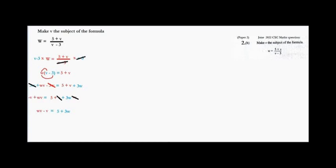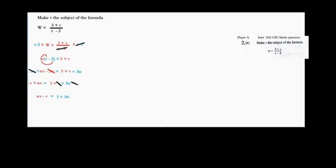What we can do here now is to factor out the common factor. We factor out V, because it is common: V into WV gives us W, and V into V gives us 1. So we have V times (W minus 1) equal 5 plus 3W. Now I divide both sides by (W minus 1). This W minus 1 cancels that W minus 1, and we have V equal (5 plus 3W) over (W minus 1). This is our answer.